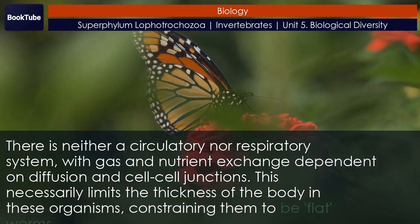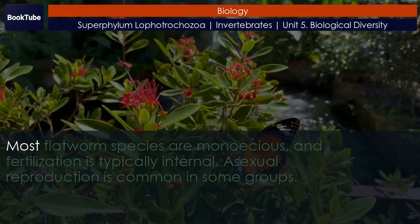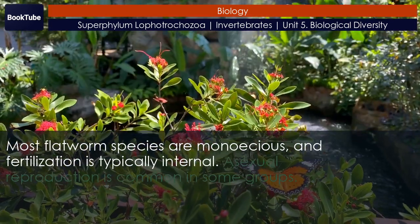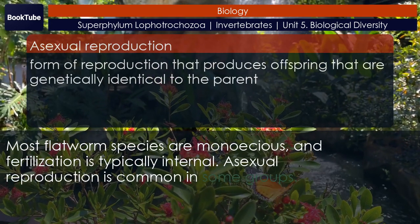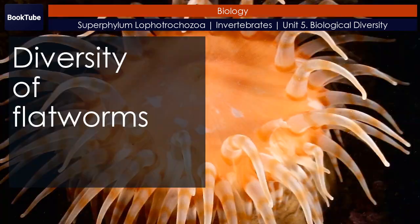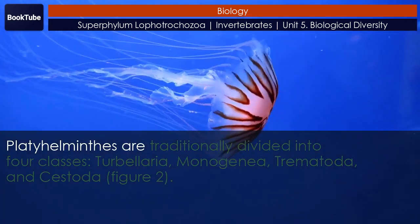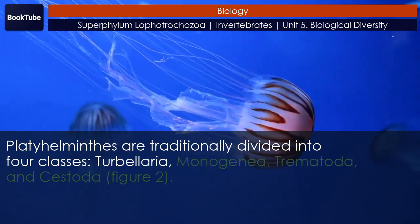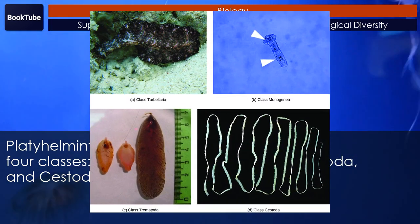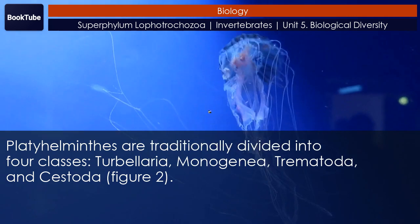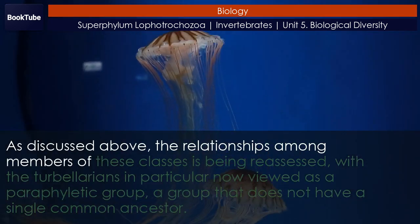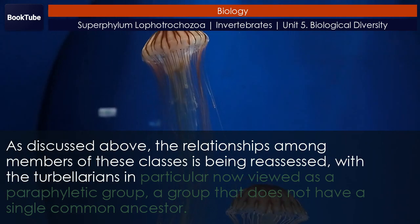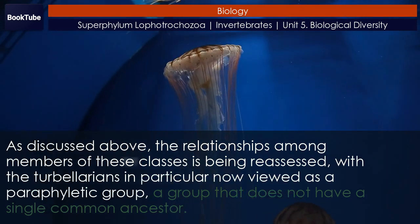This necessarily limits the thickness of the body, constraining these organisms to be flatworms. Most flatworm species are monoecious, and fertilization is typically internal. Asexual reproduction is common in some groups. Platyhelminthes are traditionally divided into four classes: Turbellaria, Monogenea, Trematoda, and Cestoda. The relationships among members of these classes is being reassessed, with the Turbellarians in particular now viewed as a paraphyletic group — a group that does not have a single common ancestor.